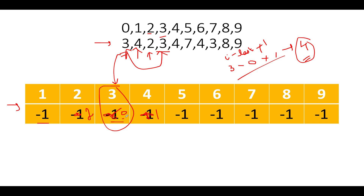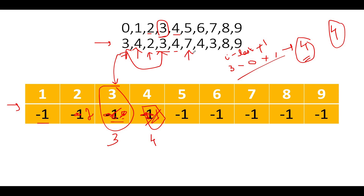We also update the last occurrence index of three to three. Next we see four. Has four occurred in the past? Yes - its last occurrence index is one. Applying the same formula: i minus last occurrence plus one, where i is four: four minus one plus one gives four again. So another possibility of the answer is four. We update four's last occurrence index to four.